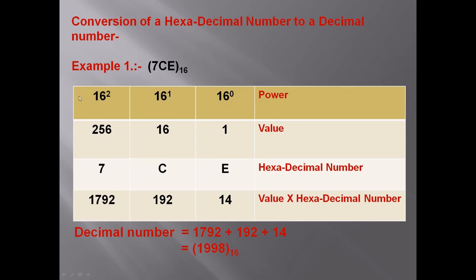The power values are: 16 power 0 equals 1, 16 power 1 equals 16, and 16 power 2 means 16 multiplied by 16, which equals 256. Then we write the hexadecimal number 7CE.